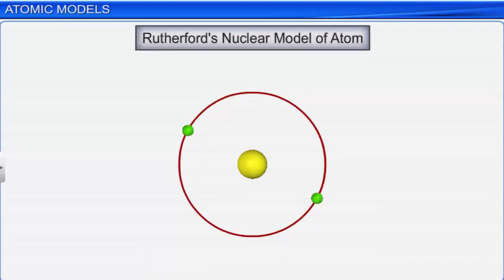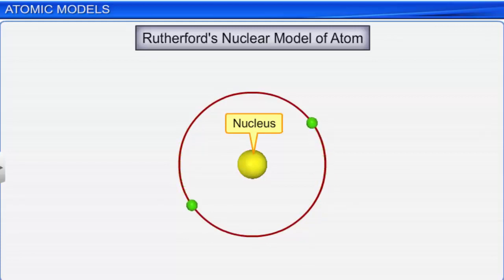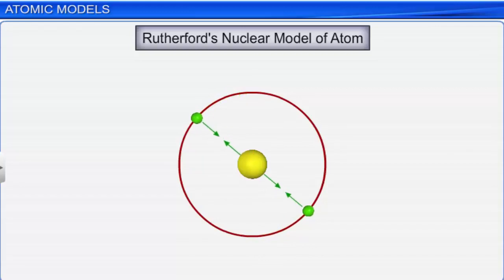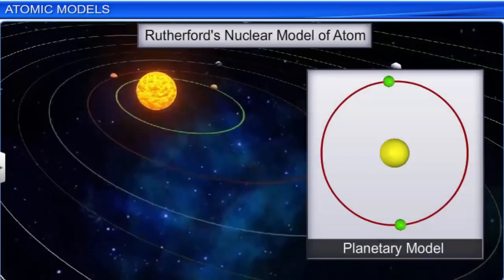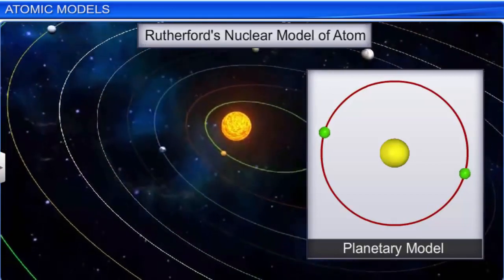According to Rutherford's nuclear model of atom: the atom consists of a tiny, dense, positively charged center called the nucleus; the entire positive charge and most of the atomic mass is concentrated in the nucleus; electrons are found outside the nucleus and revolve around it with high velocities in circular paths so as to counterbalance the electrostatic forces of attraction between protons and electrons; and electrostatic forces hold the electrons and nucleus together. As electrons move in circular paths around the nucleus just like planets revolve around the sun, Rutherford's model is also called the planetary model.